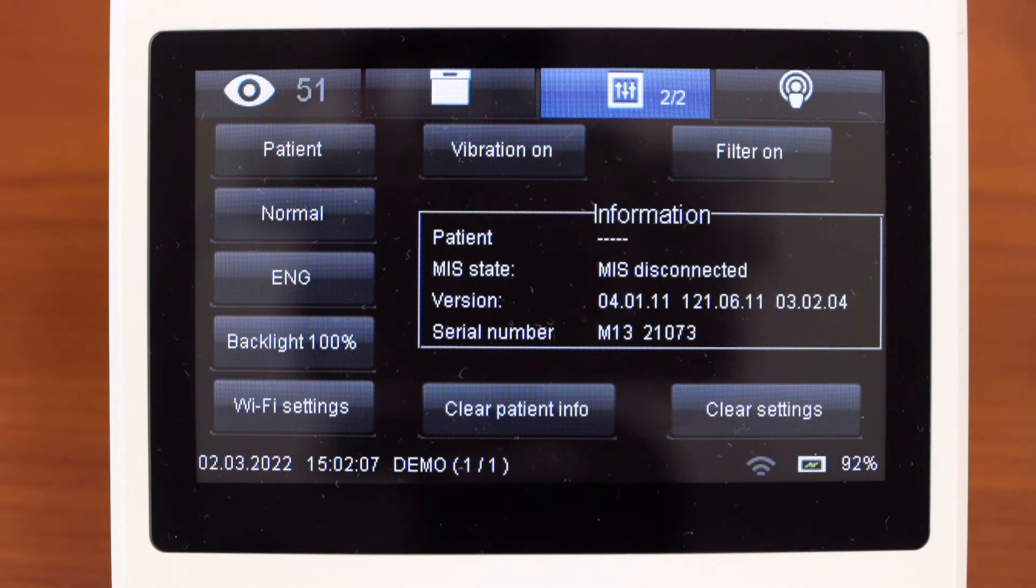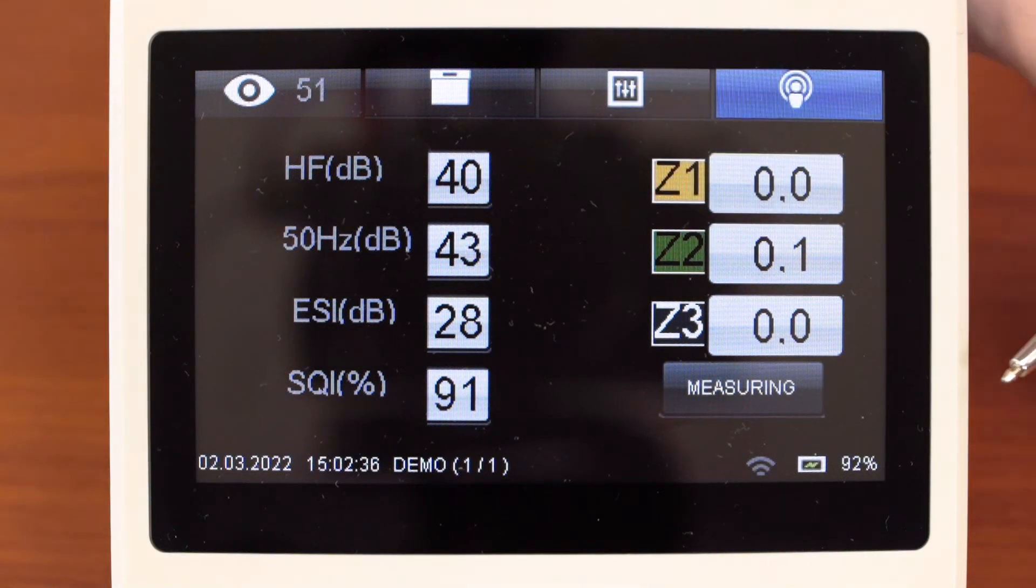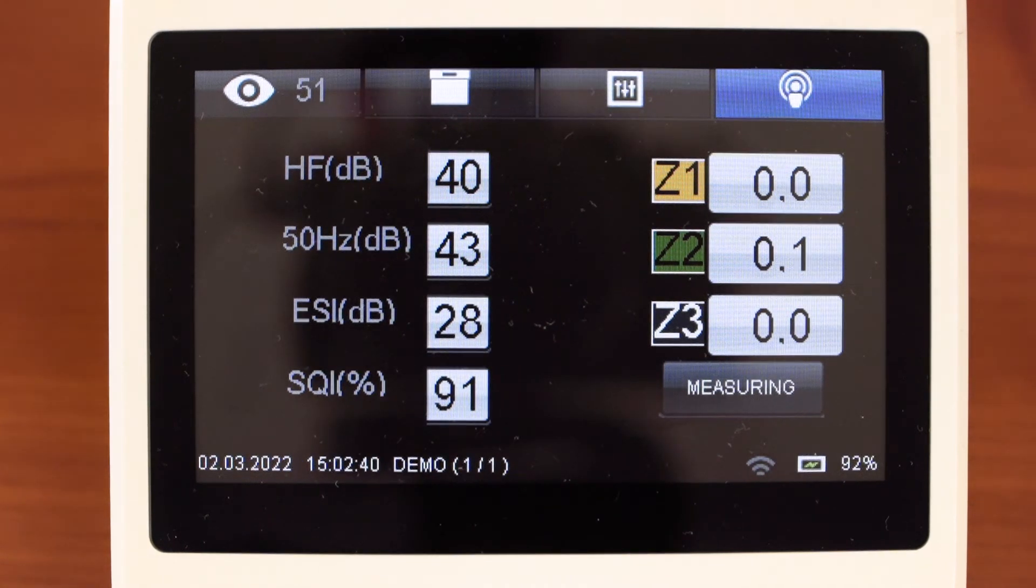The last window is signal quality. We can estimate the quality of electrode application. Different color corresponds to electrodes: yellow, green and black. Electrode impedance is displayed. This is a button measurement. Press it to make manual measurement or update the digital values.